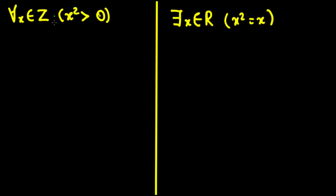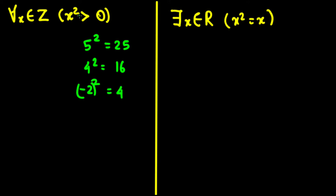Now let's look at another example. For all x belonging to the integers, x squared is greater than zero. Cases like 5 squared equals 25, 4 squared equals 16, and negative 2 squared equals 4 all seem to support it. But if we consider x equals 0, then 0 squared equals 0, which is not greater than zero. That one contradiction makes this statement false.